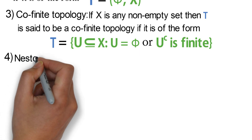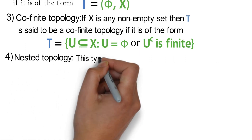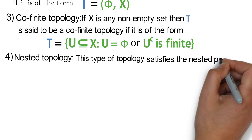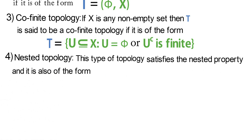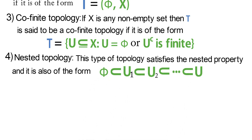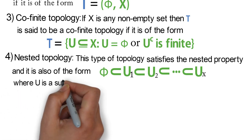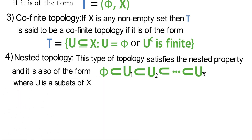Number 4 is the nested topology. This type of topology satisfies the nested property, and it is of the form: empty set ⊆ U₁ ⊆ U₂ ⊆ … ⊆ Uₓ, where each U is a subset of X. We have other types of topology such as the key topology, but let's stick with these four types for now as they are what you will need.